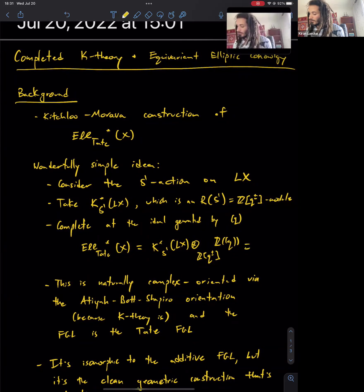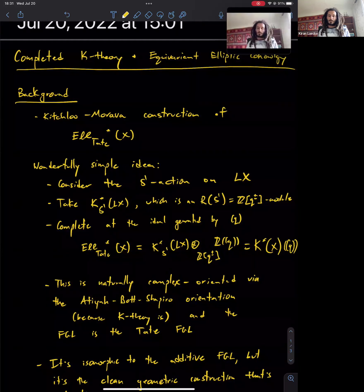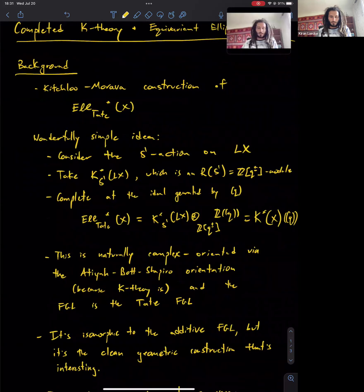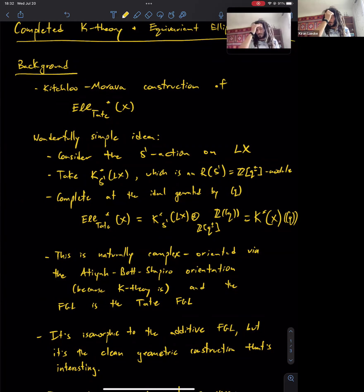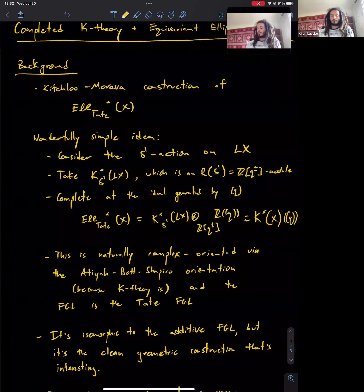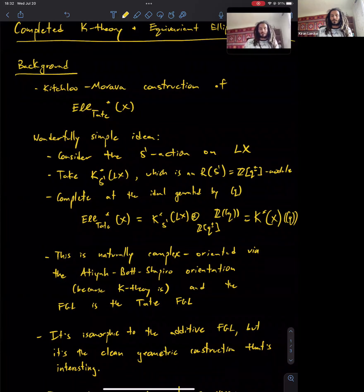So this is actually a fancy way of just taking the ordinary K-theory of X and considering Laurent polynomials with coefficients in the K-theory of X. But the point is that this thing comes with a natural complex orientation because we've built it using complex K-theory, which has a nice Atiyah-Bott-Shapiro orientation with tons of good properties. So you get a formal group law, and that's the Tate formal group law. You get a nice short geometric presentation of elliptic cohomology at the Tate curve.